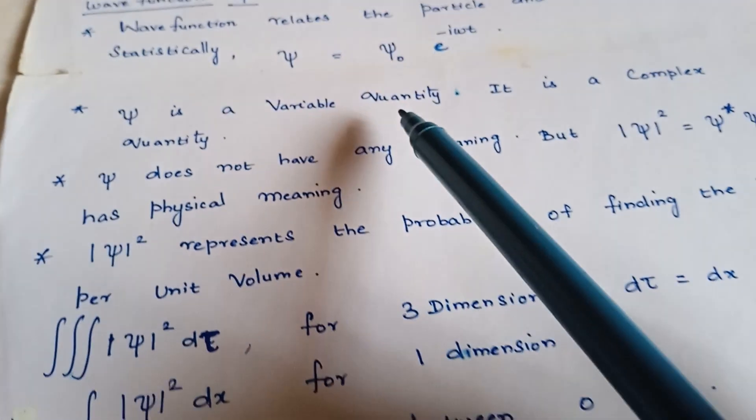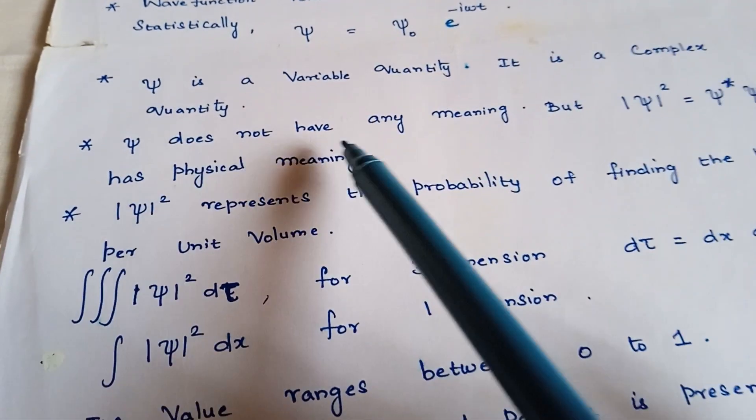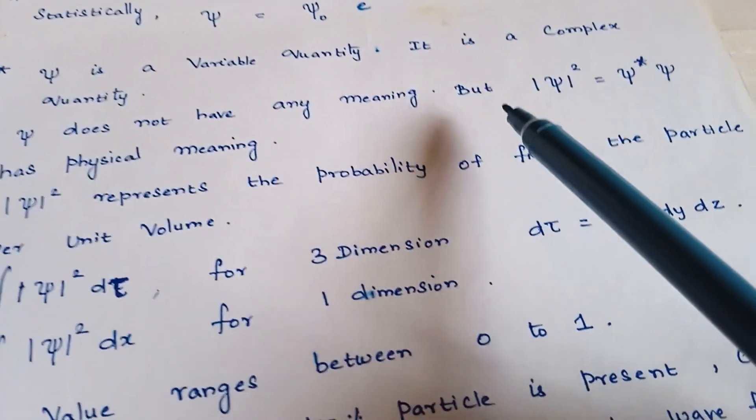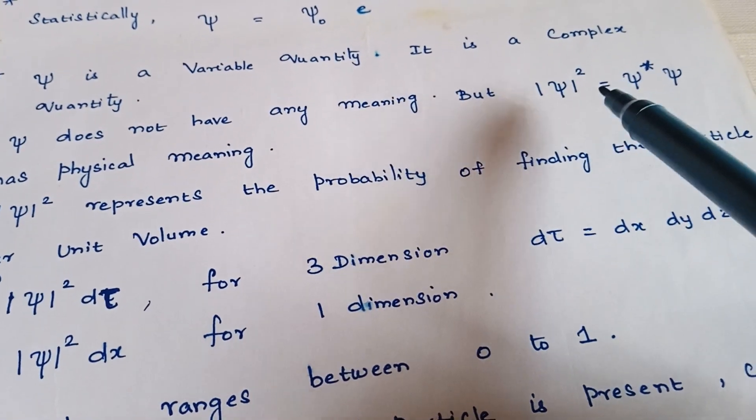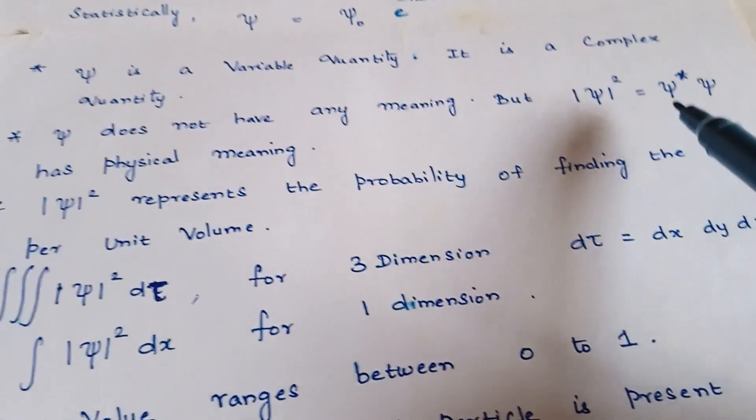Psi is a variable quantity and it is a complex quantity. Psi does not have any physical meaning, but mod psi square, modulus of psi square, which is equal to psi star psi, has physical meaning.